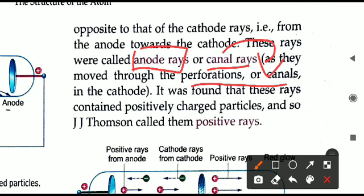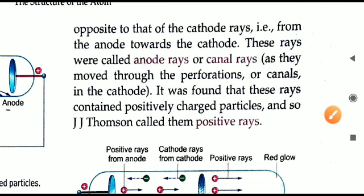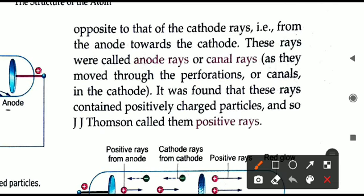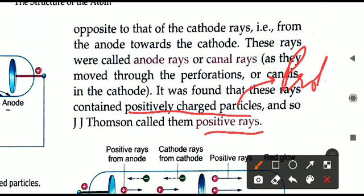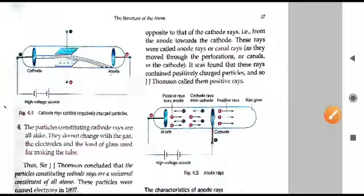Both names — anode rays and canal rays — you have to remember. Goldstein also called these particles positive rays because he found that these rays contain some positively charged particles. These particles are what are known as protons. This was the experiment where protons were discovered in the anode rays, using the same setup as J.J. Thomson but with one small adjustment: a perforated cathode instead of a normal one. That is how positive rays or anode rays were discovered.